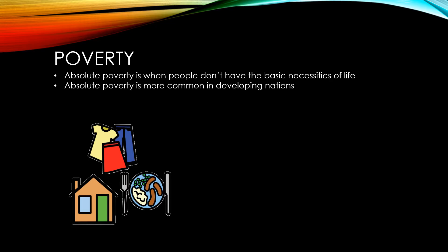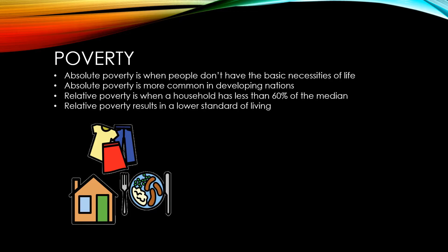What is more common in developed nations is relative poverty. This is where a household has less than 60% of the median income. These households have a lower standard of living because they can afford fewer things. Around 25% of households in the UK could be said to be living in relative poverty.